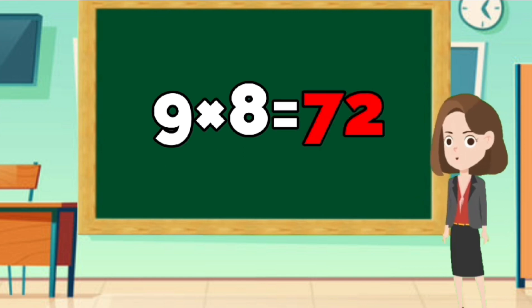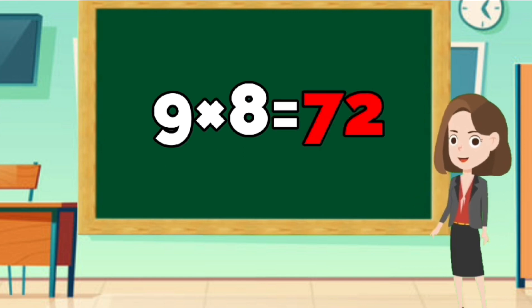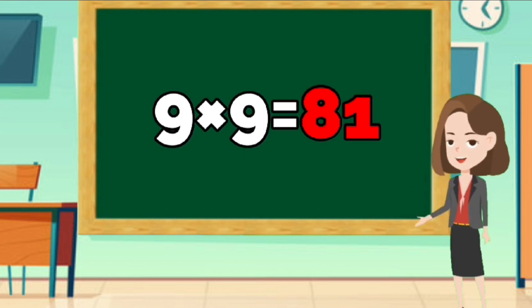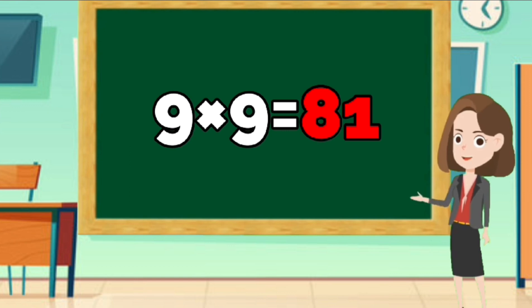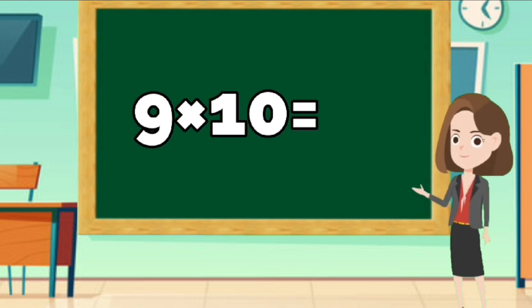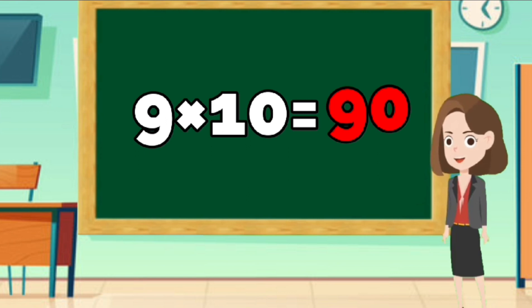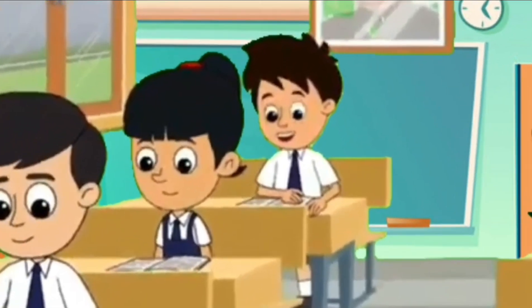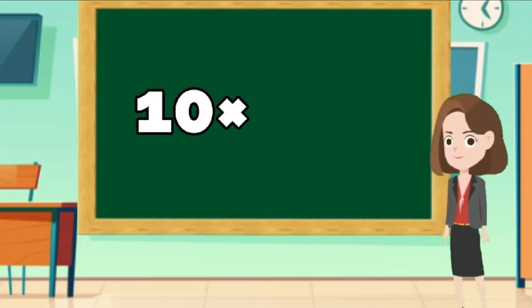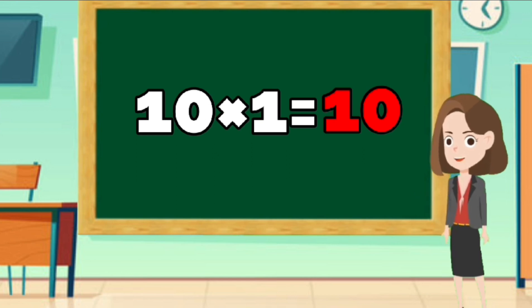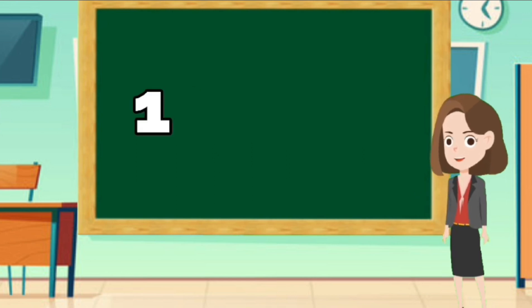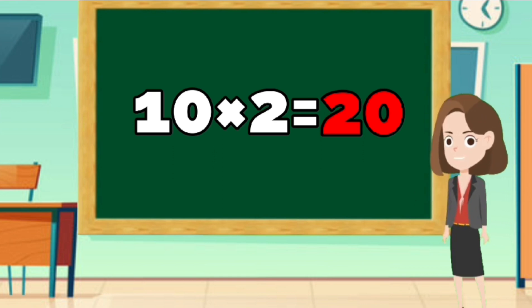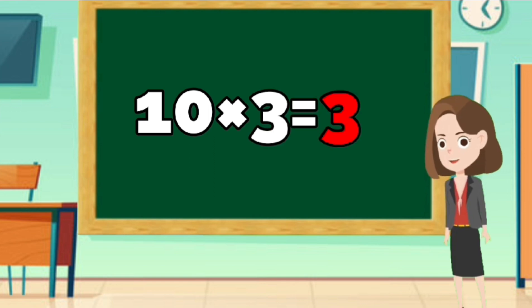9 times 9 is 81. 9 times 10 is 90. Let's learn Table of Ten. 10 times 1 is 10. 10 times 2 is 20. 10 times 3 is 30.